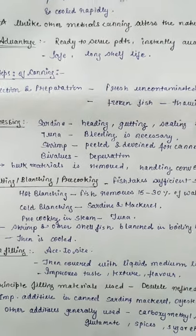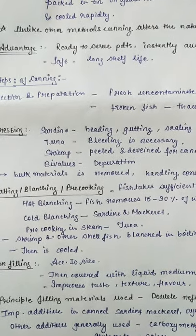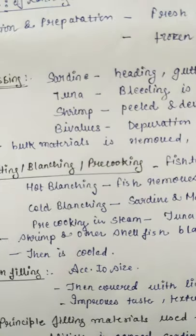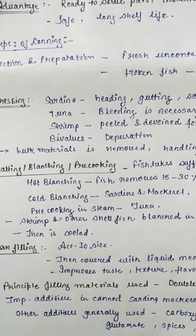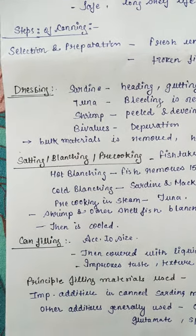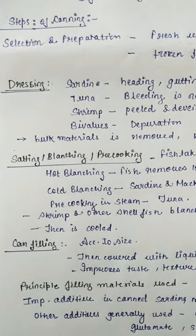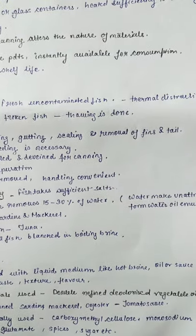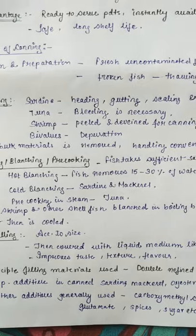In cold blanching, sardine and mackerel are cold blanched. Pre-cooking in steam is done for tuna, shrimp, and other shellfish, which are blanched in boiling water brine, then cooled in a cold room overnight. Can filling is then done according to the size of the can and the fish. The blanched fish is filled accordingly.